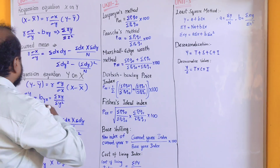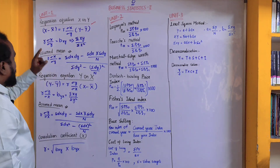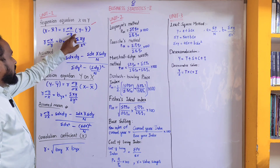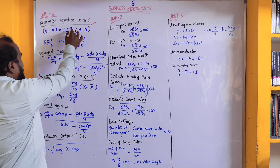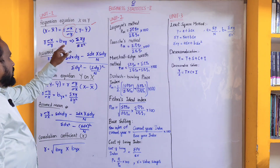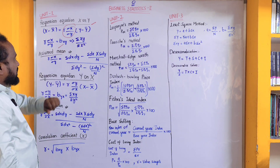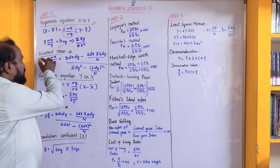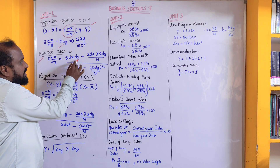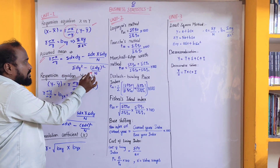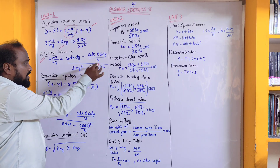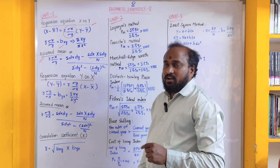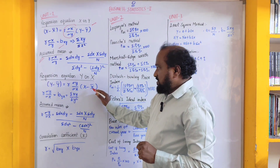Unit number one is regression. In regression equation X on Y: X minus X-mean is equal to regression of standard deviation X by standard deviation Y, into Y minus Y-mean. Here this can be taken as b-XY, and it can be found with the formula sigma-XY by X-square. For the assumed mean method: sigma-dX-dY minus sigma-dX into sigma-dY by N, divided by sigma-d-square minus sigma-dY-square divided by N.